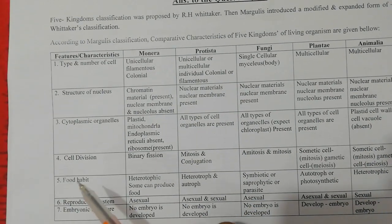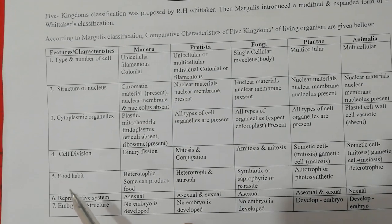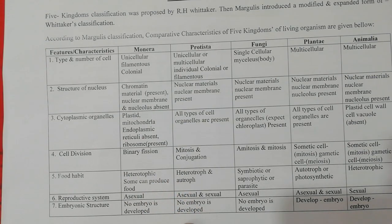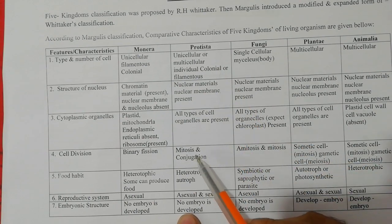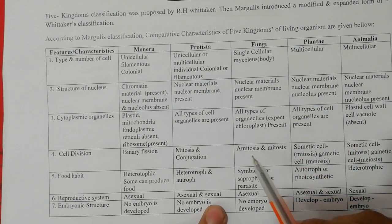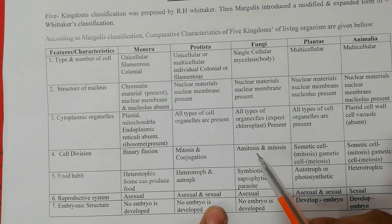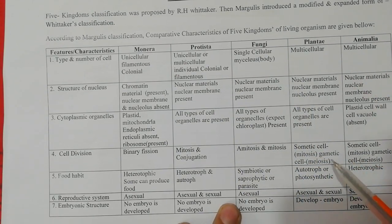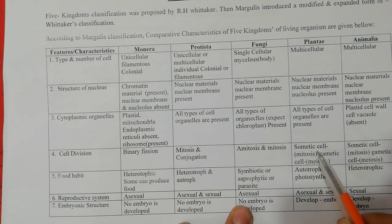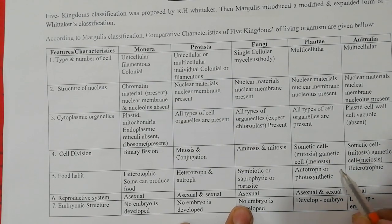The third feature is cell division. In Monera, division occurs by binary fission. In Protista, division is by mitosis. Fungi reproduce by amitosis and mitosis; amitosis occurs in yeast spores. Plants have three types: amitosis, mitosis, and meiosis — somatic cells divide by mitosis and reproductive cells by meiosis. Animals follow the same pattern as plants.